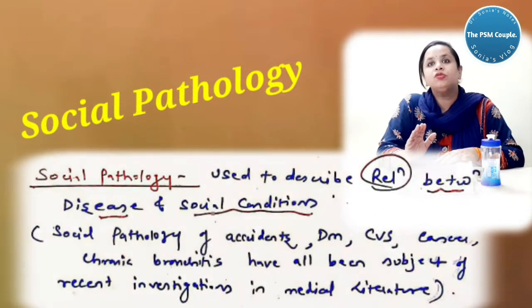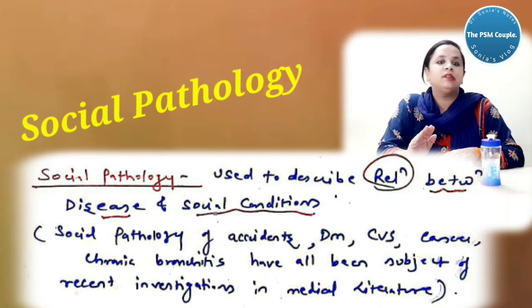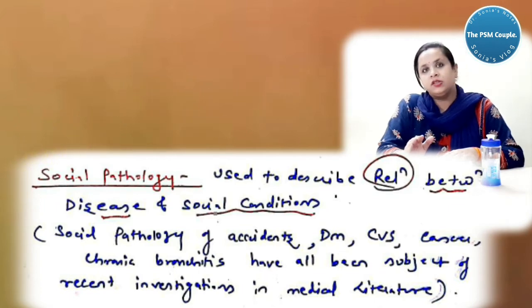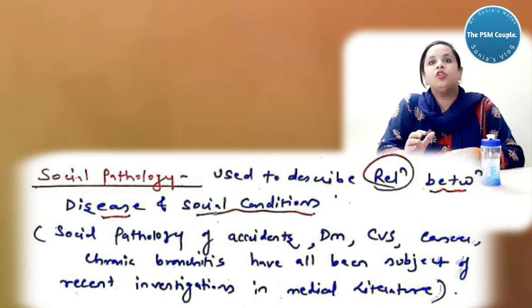Now we are coming to another term that is called social pathology. It is used to describe relationship between disease and the social conditions. Social pathology of accidents, diabetes mellitus, cardiovascular system cases, chronic bronchitis have all been the subject of recent investigations in medical literature.